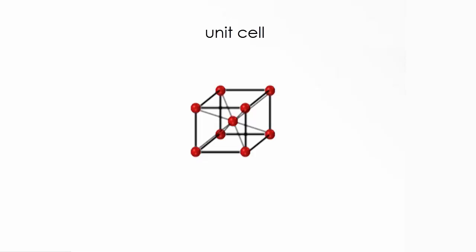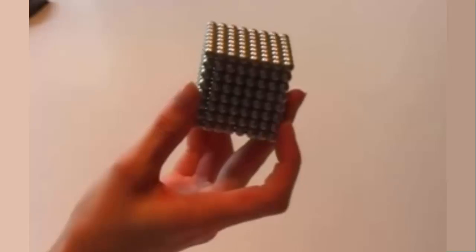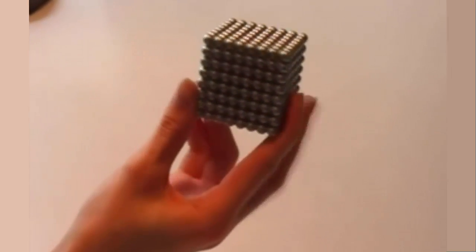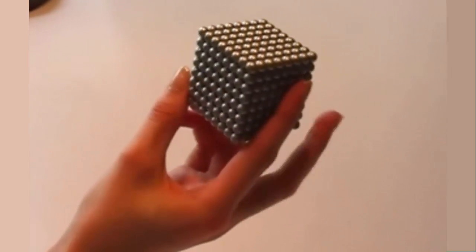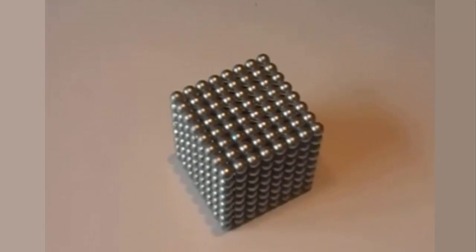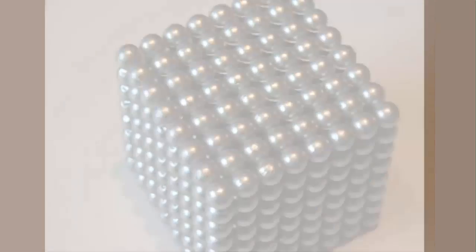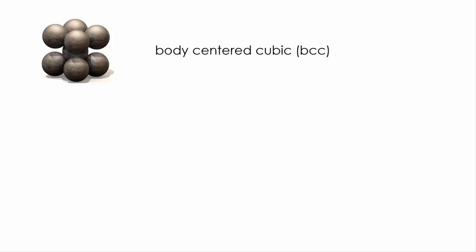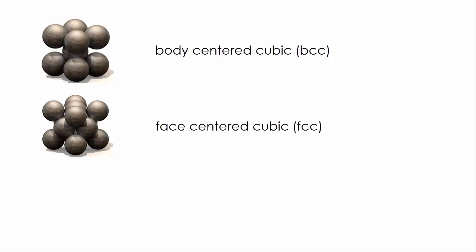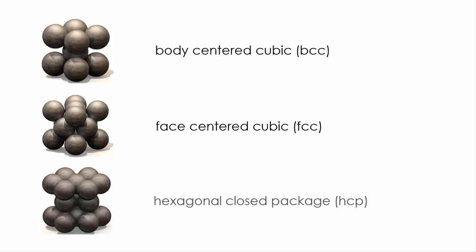During solidification, individual atoms assemble and form the unit cell of a crystal lattice. Depending on different materials, there are different types of lattices, for example body-centered cubic BCC, face-centered cubic FCC, or hexagonal close-packed HCP.